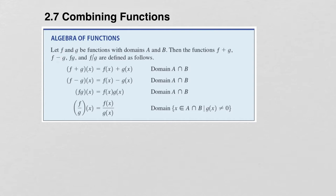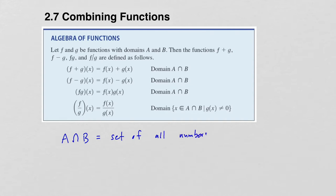So if you're given two functions f and g, and suppose they have domains A and B respectively, then the functions f plus g, f minus g, f times g, and f divided by g are defined as follows. For example, the function f plus g of x is defined to be f of x plus g of x, and the domain of this function is A intersect B. A intersect B is equal to the set of all numbers in both A and B.